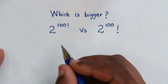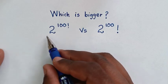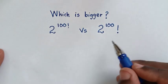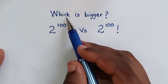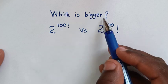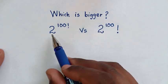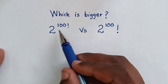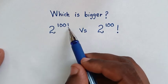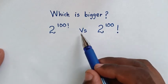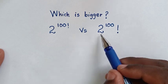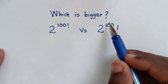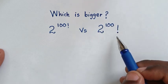Hello, you are welcome to solve this math problem: which is bigger between these two numbers — 2 to the power of 100 factorial, versus 2 to the power of 100, all of this factorial?